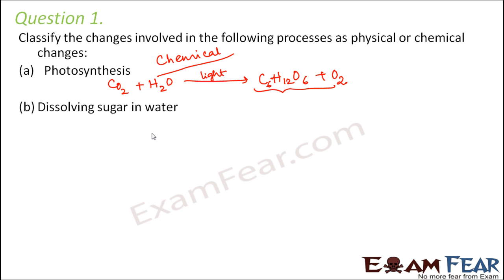Next is dissolving sugar in water. When we dissolve sugar in water, no chemical reaction takes place as such — no new chemical substances are formed. Sugar and water just remain together for some time, and the change is reversible. When you heat this sugar solution, sugar and water get separated out. So this is a physical change.